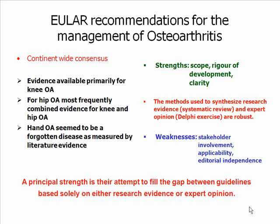Summing up the EULAR recommendations, it was possible to create a continent-wide consensus, but evidence was primarily available only for knee OA. For hip OA, evidence was mostly available in combination with knee OA, and hand OA appeared to be a forgotten disease. The strengths are rigor of development, scope, and clarity, while weaknesses include lacking stakeholder involvement and questions of applicability. The principal strength is the attempt to bridge the gap between guidelines based solely on research evidence and those based on expert opinion.